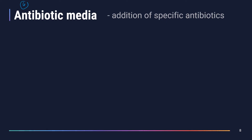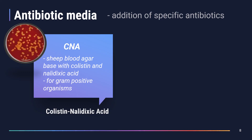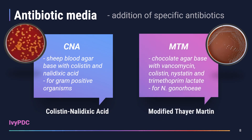Lastly, antibiotic media are selective media with the addition of antibiotics. These antimicrobial agents allow the growth of specific organisms based on their antibiotic susceptibility. Colistin-nalidixic acid agar (CNA) selects for gram-positive organisms like Staphylococcus and Streptococcus species; its base is sheep blood agar with colistin and nalidixic acid added. Modified Thayer-Martin agar (MTM) selects for Neisseria gonorrhoeae; its base is chocolate agar plate with vancomycin, colistin, nystatin, and trimethoprim lactate added.